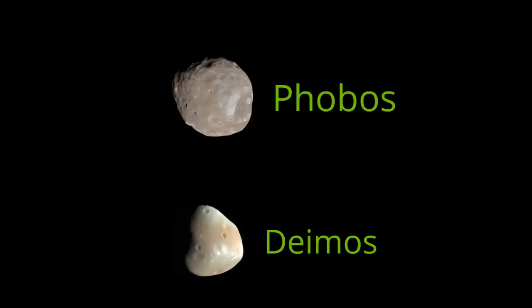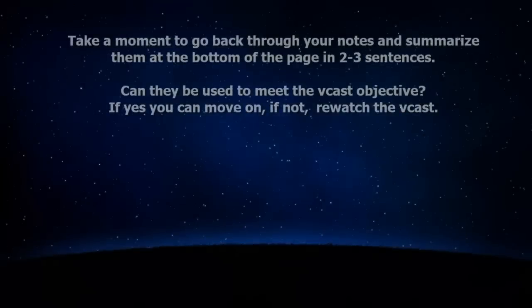So that about does it. We've covered the four main ways that the moon is unique compared to other moons. In the next vodcast, we'll start looking at some of those features on the moon and how they formed.